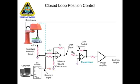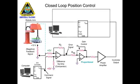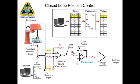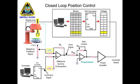The command signal from the computer consists of binary numbers that increment until a value is reached that represents the desired position. The binary value is then converted to an analog voltage by the digital-to-analog converter, indicating the position that the arm is required to move to.